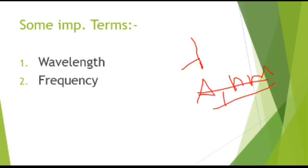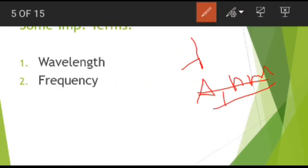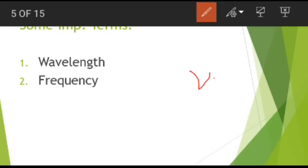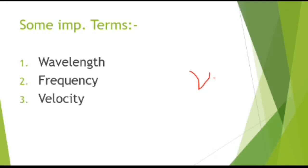Frequency is the number of waves which pass through a given point in one second. It is denoted by nu (ν). Next, velocity is the linear distance a wave travels in one second. Wave number is the number of waves present in one centimeter length — it is the reciprocal of wavelength.